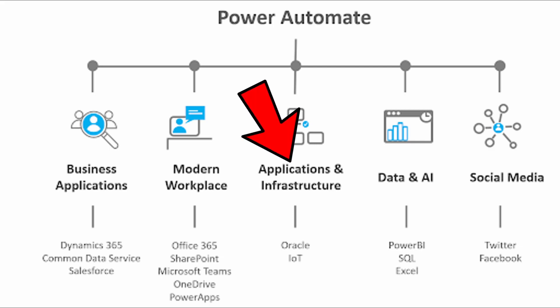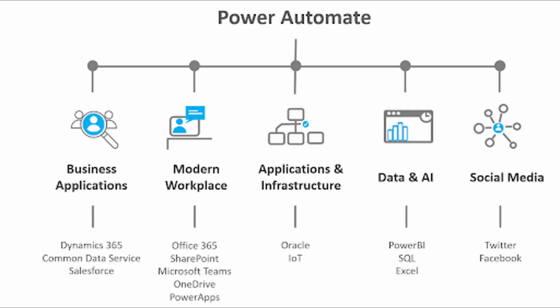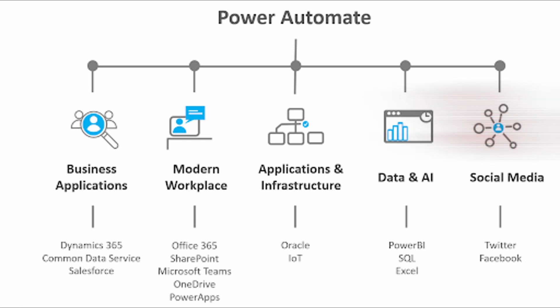We can also automate things regarding applications and infrastructure — for example, updating Oracle or managing IoT devices, collecting data from them, and storing it. We can also manage data in AI tools like Power BI, SQL, and Excel, create reports automatically and on the fly, and check that certain data pipelines are running without having to log in to the application. We can also do much on social media, such as creating posts, doing likes, and checking different things. Whatever comes to mind, we can pretty much automate it with Power Automate.